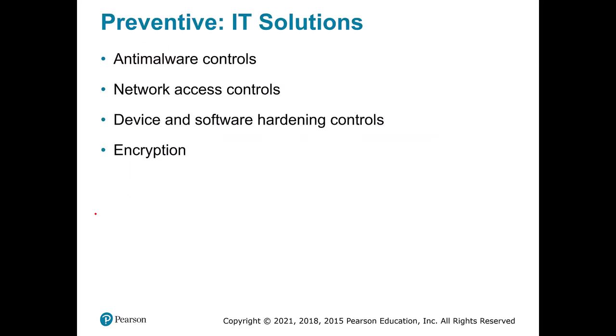Other IT preventative controls include anti-malware, such as Norton Antivirus or Windows Defender. You might also find access controls on the network, like requiring people to log in with Duo before getting access. Device and software hardening typically involves something like encryption, so someone can't grab the hard drive out of your computer and read the files on it. That way, if you lose your computer or someone steals it, it minimizes the damage to the organization.